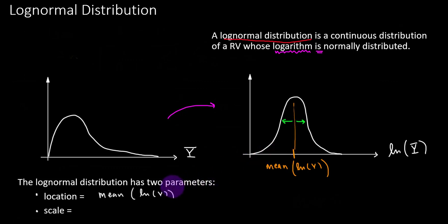But let's put it into context to concepts that we are already familiar with. The location is the mean of the natural log of the variable. So we already know how to interpret location because that is just the center of this normal distribution.